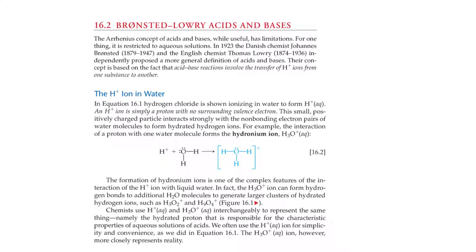Section 16.2, Bronsted-Lowry acids and bases. The Arrhenius concept of acids and bases, while useful, has limitations. For one thing, it is restricted to aqueous solutions. In 1923, the Danish chemist Johannes Bronsted and the English chemist Thomas Lowry independently proposed a more general definition of acids and bases. Their concept is based on the fact that acid-base reactions involve the transfer of protons or hydrogen ions from one substance to another.